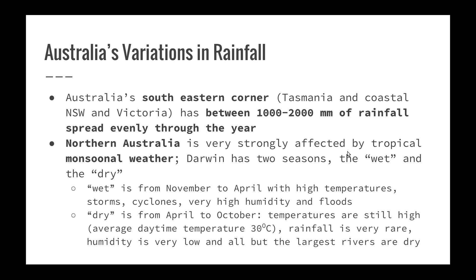Northern Australia is very strongly affected by tropical monsoon weather. Darwin has two seasons: the wet season and the dry season. The wet season runs from November to April with high temperatures, storms and cyclones, very high humidity and floods across huge areas of floodplain in northern Australia. The dry season runs from April to October; temperatures are still high with an average daytime temperature in Darwin in July of about 30 degrees Celsius, but rainfall is rare, humidity is very low, and all but the largest rivers dry up. This variable environment selects organisms able to cope with these changes.